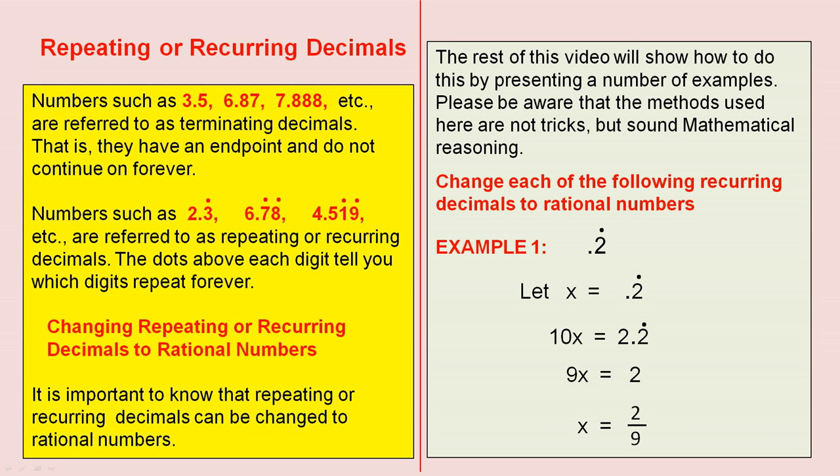Change each of the following recurring decimals to rational numbers. And the first one is 0.2 recurring. Now, 0.2 recurring means 0.22222 and the 2 goes on forever. So let x equals 0.2 recurring. Therefore, 10x is 2.2 recurring. Now, what we do, in the same manner as simultaneous equations,